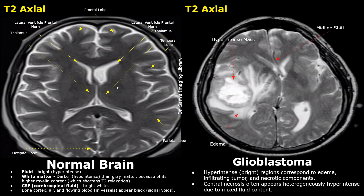The cerebrospinal fluid appears bright white. The bone cortex, air, and flowing blood in vessels appear black.